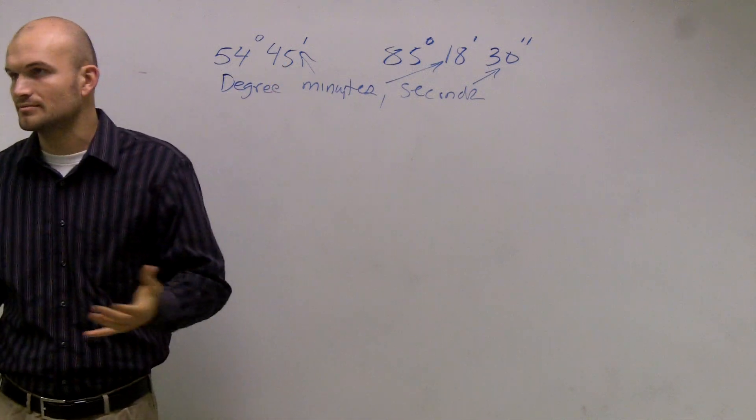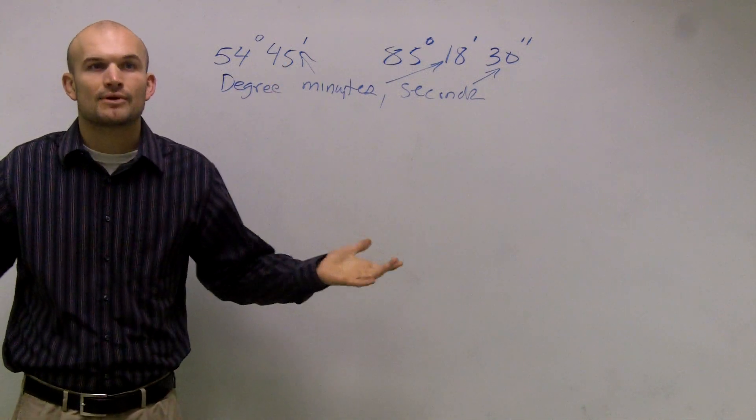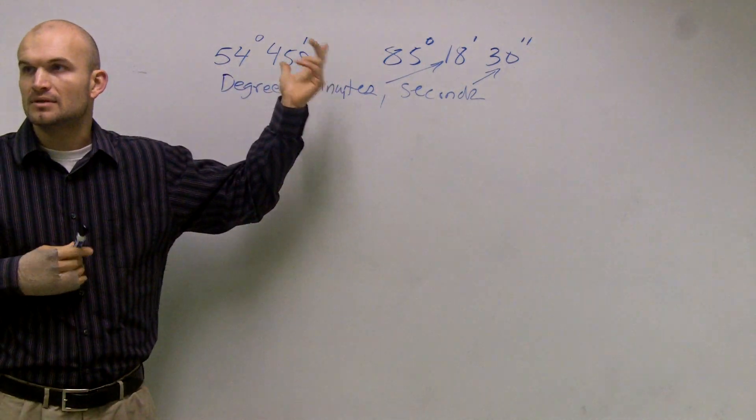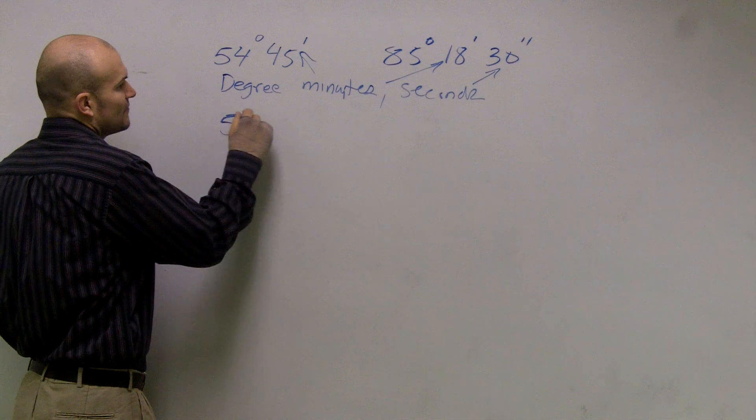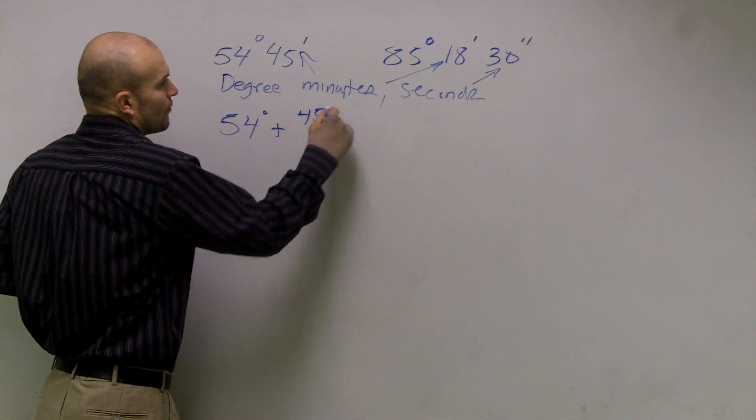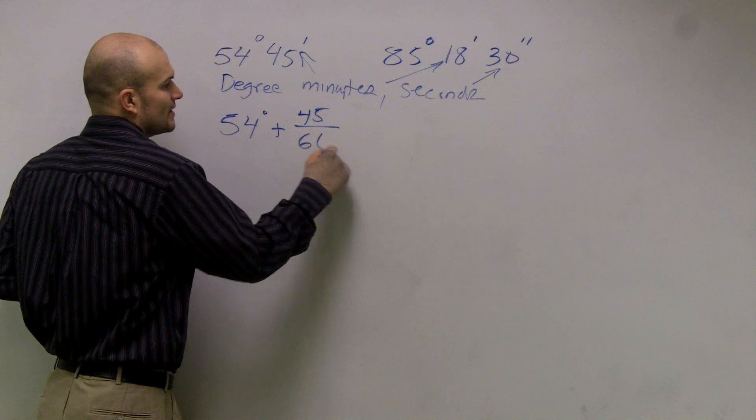think of degrees as hours. Just think of it as an hour. So if degrees was hours, how many minutes are in an hour? 60. So what I can do is I can rewrite 54 degrees plus 45 minutes out of a total of 60.